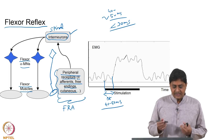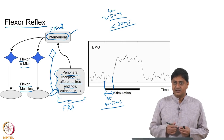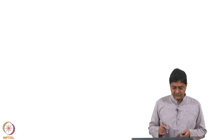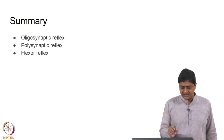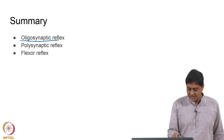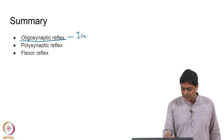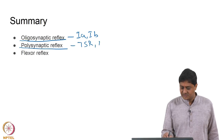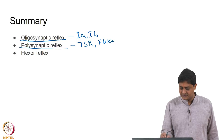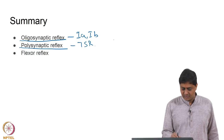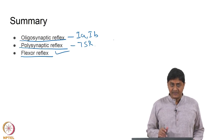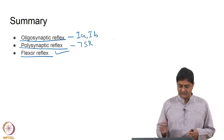The crossed extension reflex and other related phenomena will be discussed in future classes. In summary, this class covered oligosynaptic reflexes — including the 1A and 1B examples — and polysynaptic reflexes including the tonic stretch reflex and the flexor reflex. With this we come to the end of this class. Thank you.